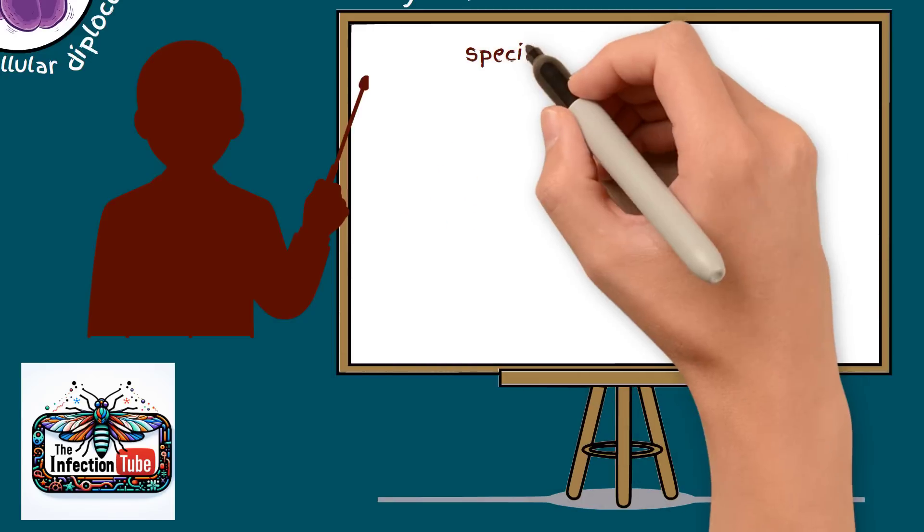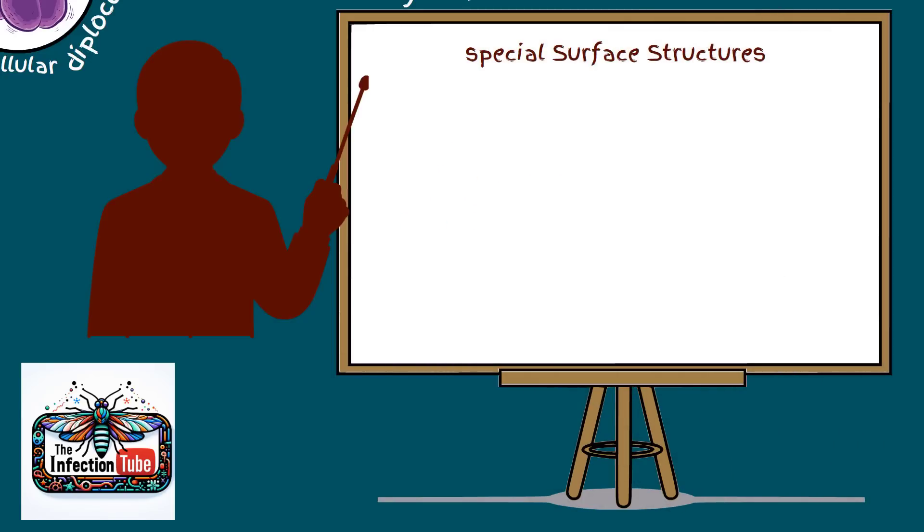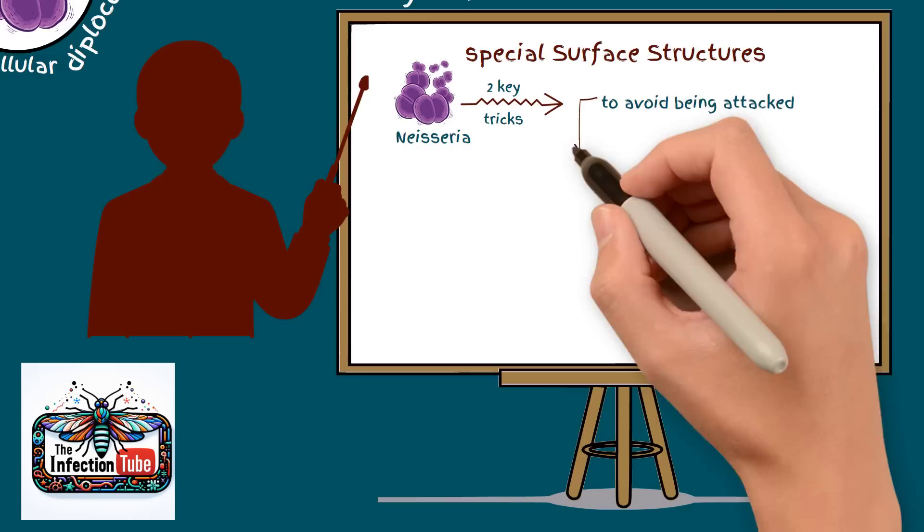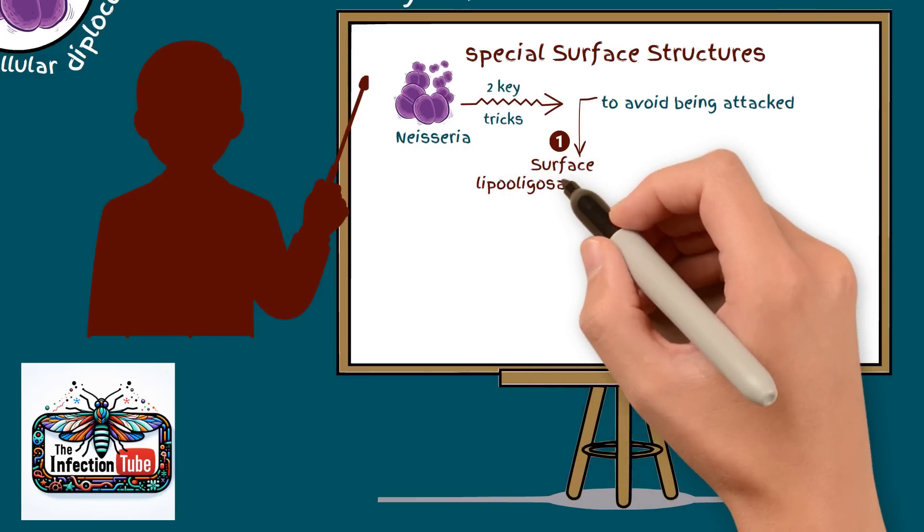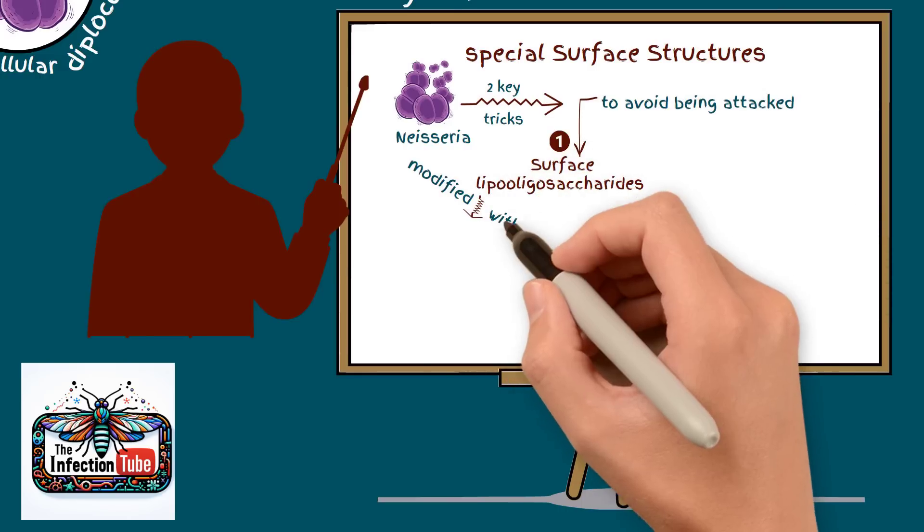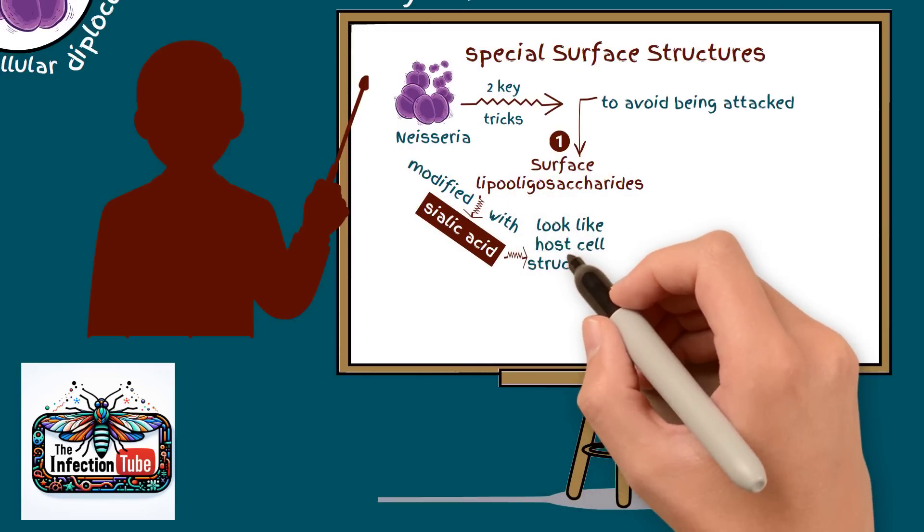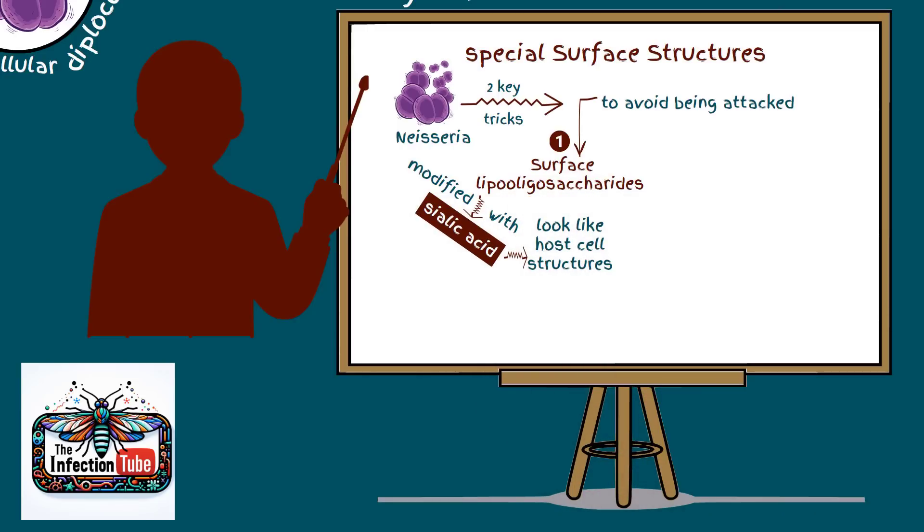The second factor is the special surface structures that help Neisseria hide from the immune system. Neisseria has two key tricks to avoid being attacked. 1. Surface lipooligosaccharides that are modified with sialic acid to look like host cell structures and prevent complement activation.